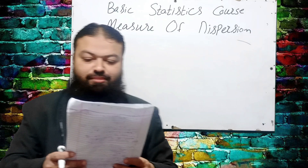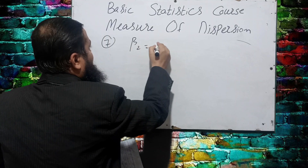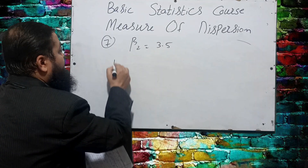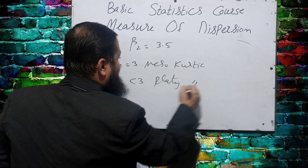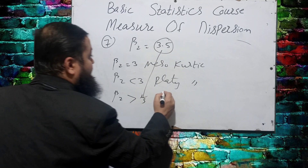Question number seven: for a distribution, β₂ is found to be 3.5. The distribution is — we know if β₂ = 3 it is mesokurtic, if β₂ < 3 it is platykurtic, and if β₂ > 3 it is leptokurtic. Since 3.5 > 3, the distribution is leptokurtic. Leptokurtic will be the correct option.